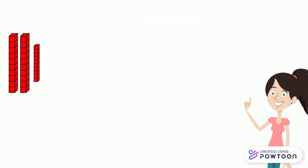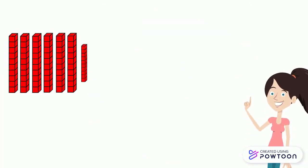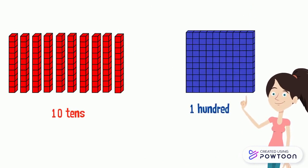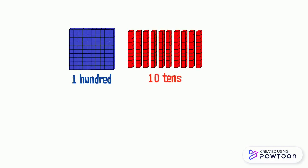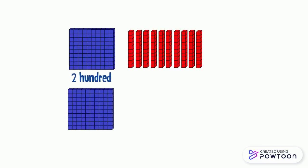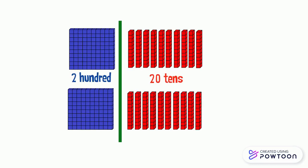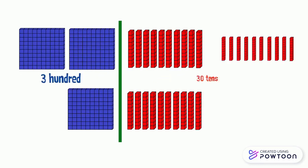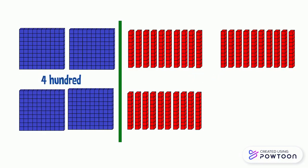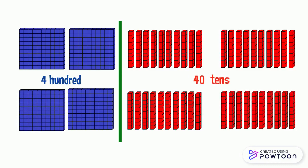Now, we will find the relation between the tens and the hundreds. In 100, there are 10 tens. So, in 200, there are 20 tens. In 300, there are 30 tens. In 400, there are 40 tens, and so on.